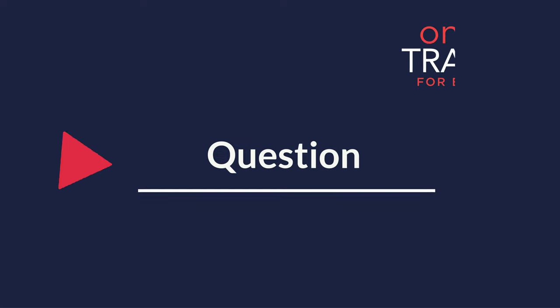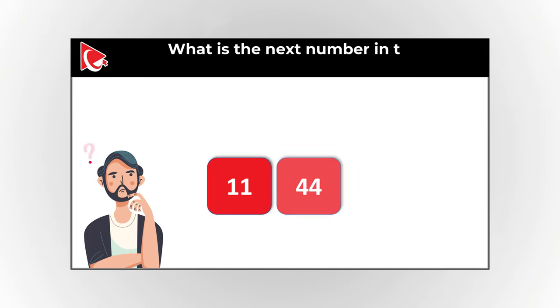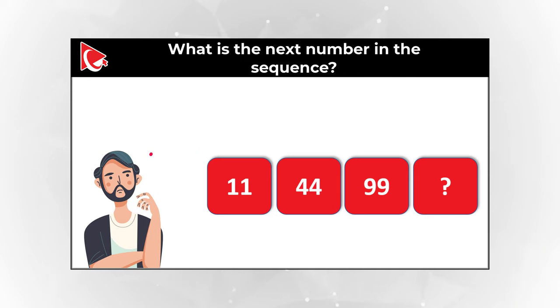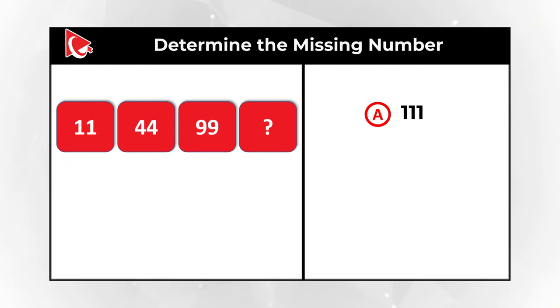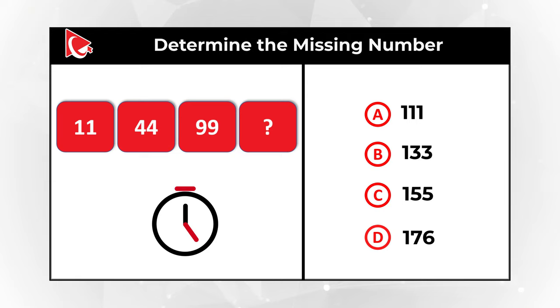Here's an interesting question where you need to calculate the missing number. You're presented with numbers 11, 44, 99, and you need to continue the sequence and determine the missing number from four choices: A: 111, B: 133, C: 155, D: 176. Give yourself a little bit of time — maybe pause this video to calculate the solution.